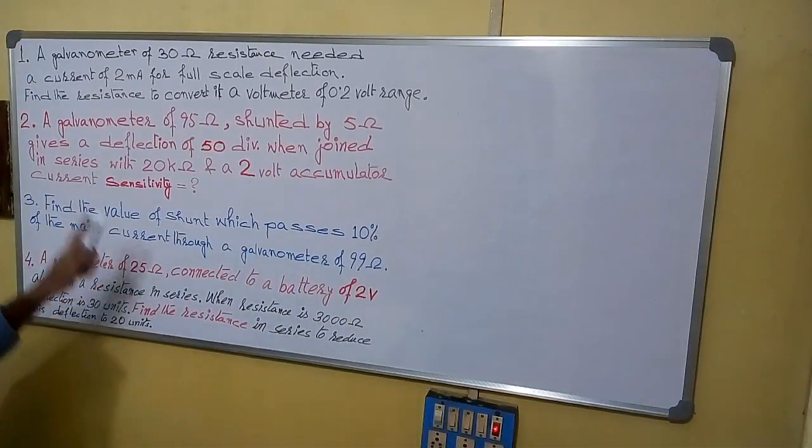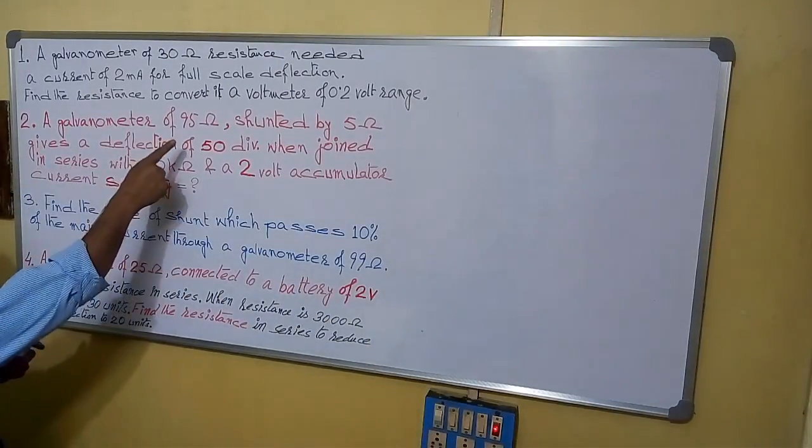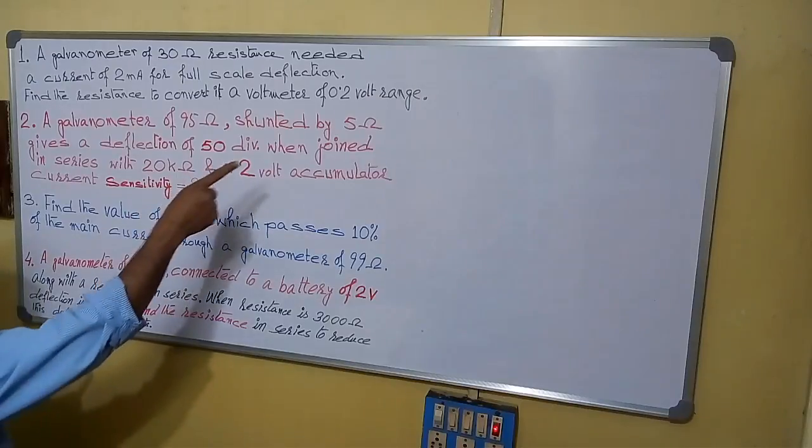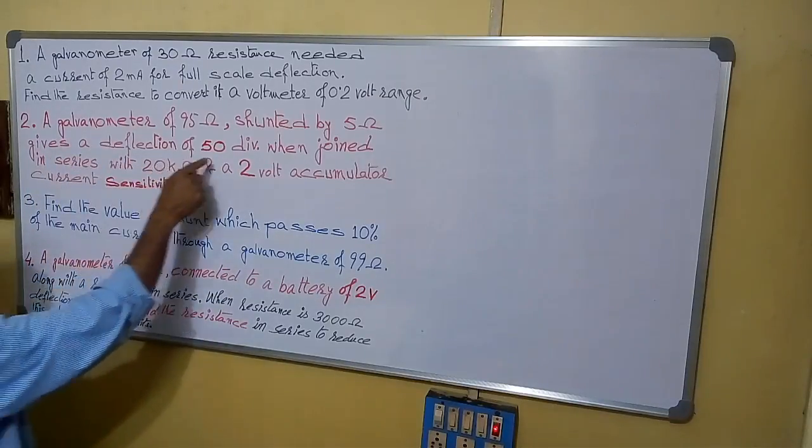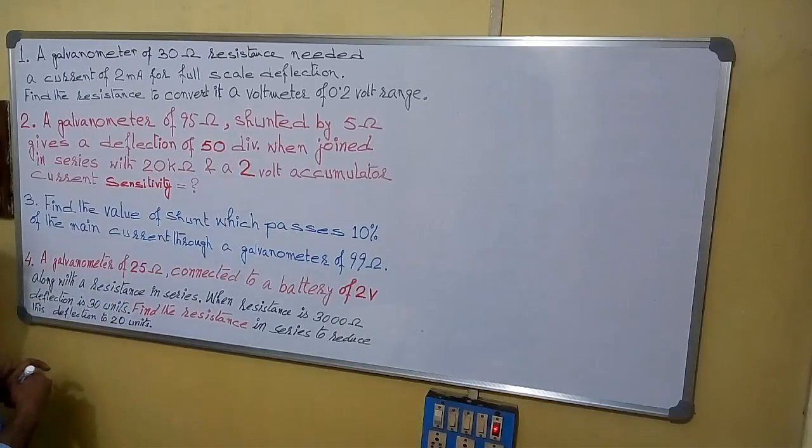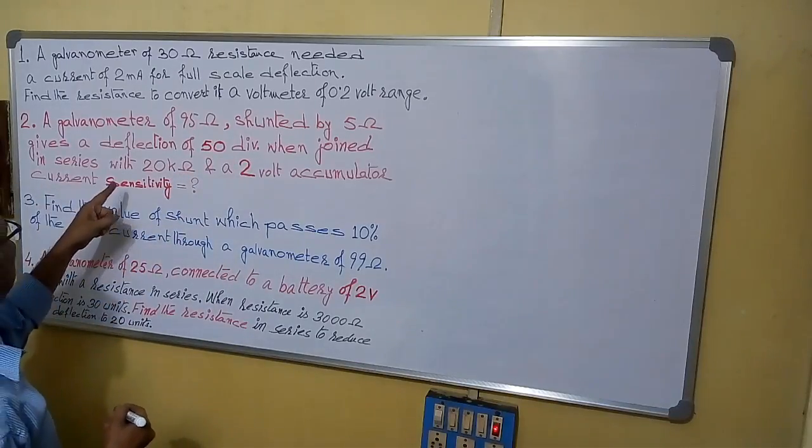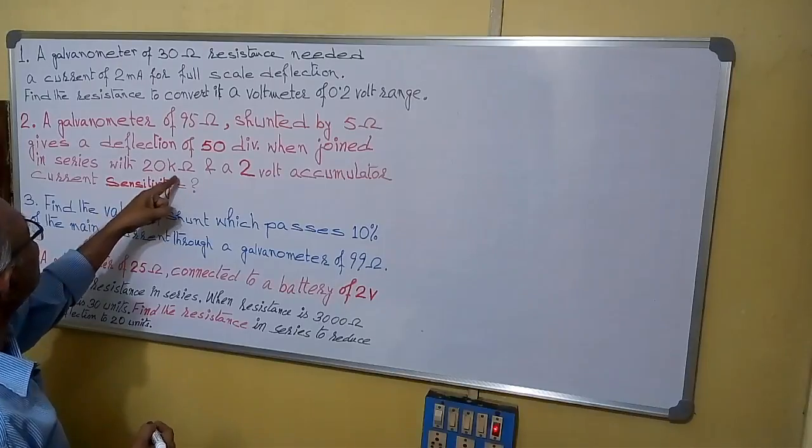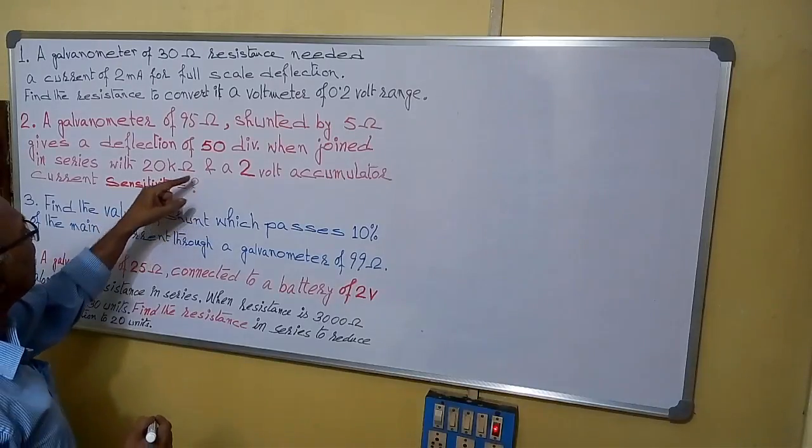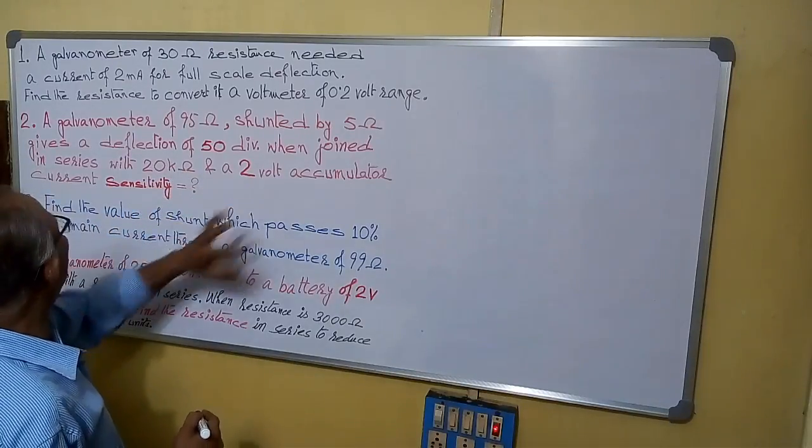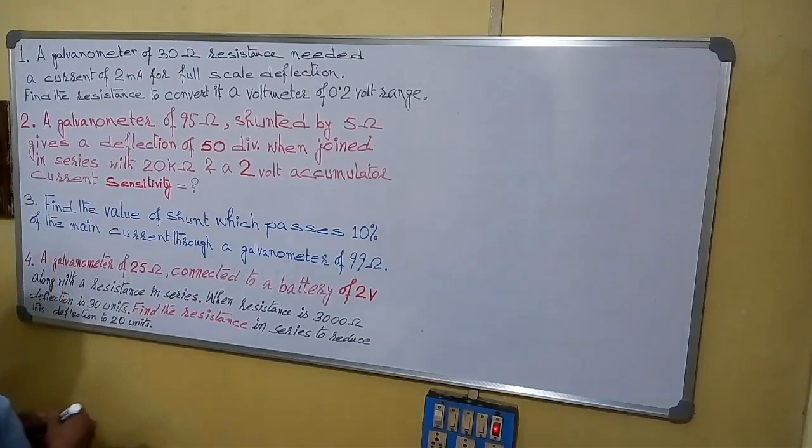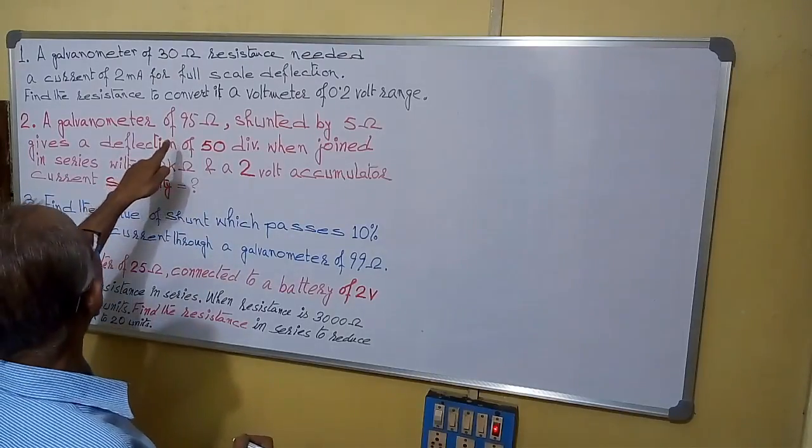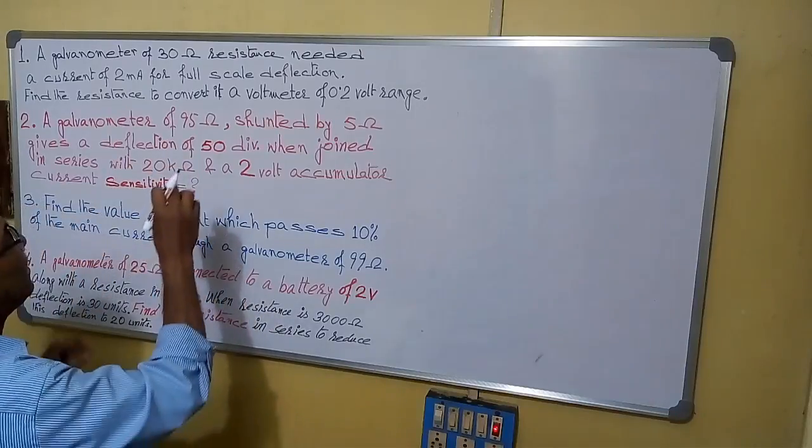What is that? A galvanometer of 95 ohm shunted by a 5 ohm resistor gives a deflection of 50 division when joined in series with 20 kilo ohm resistor and a 2 volt accumulator. We have to find the current sensitivity. First see, galvanometer is 95 ohm.